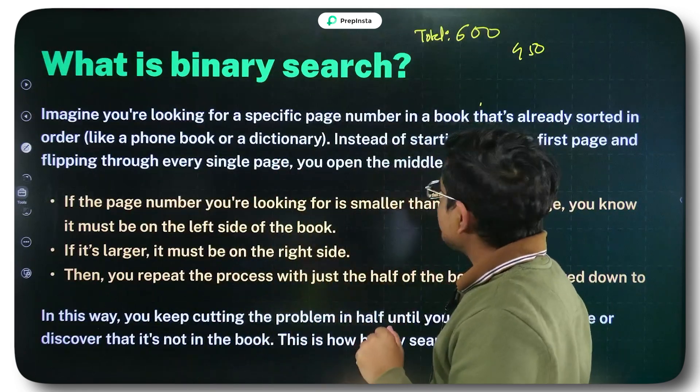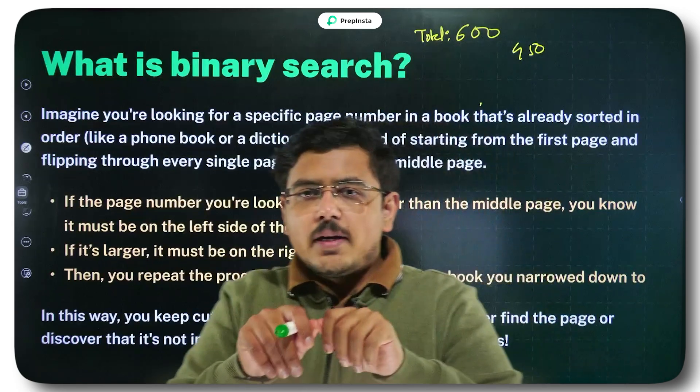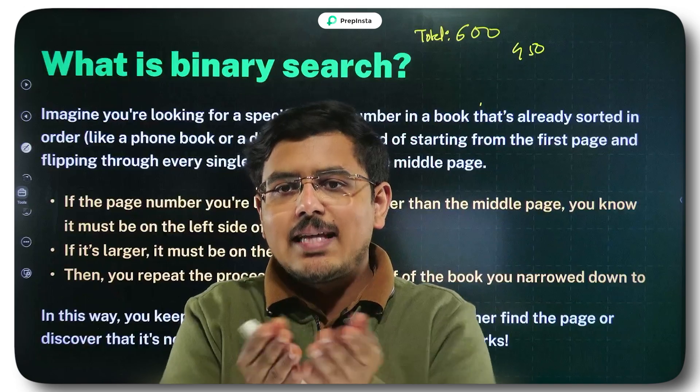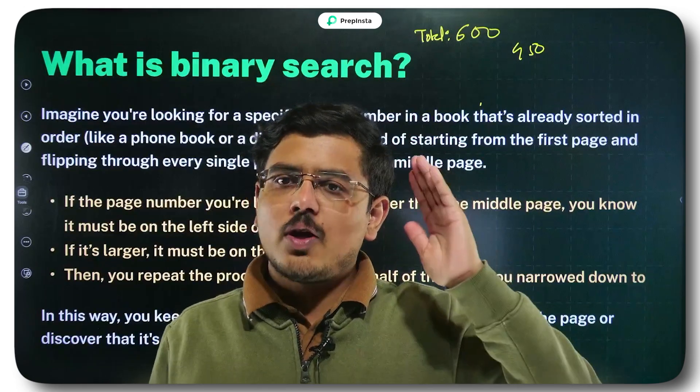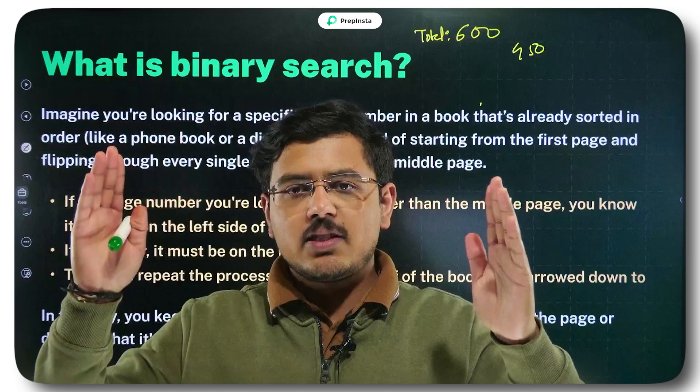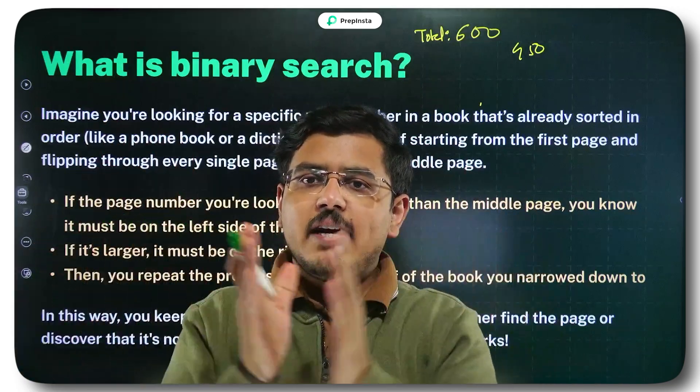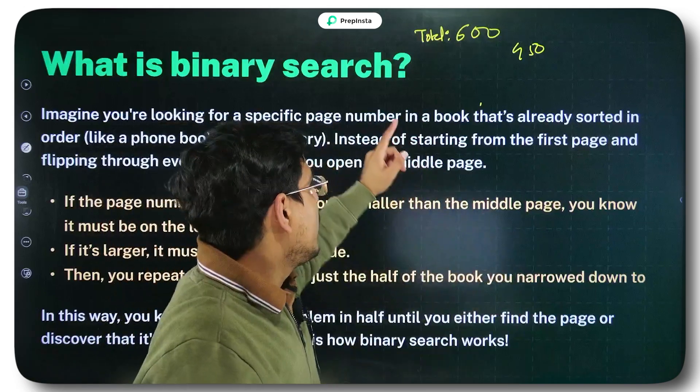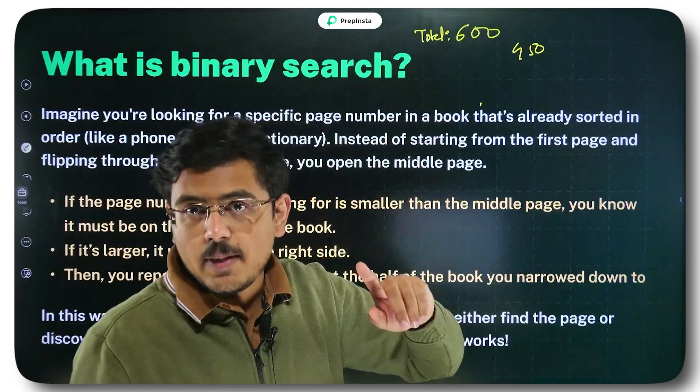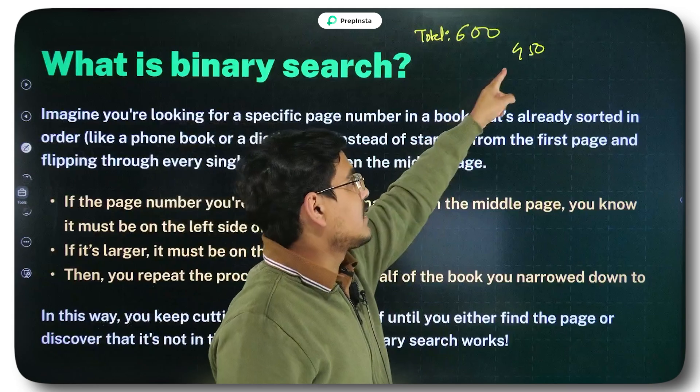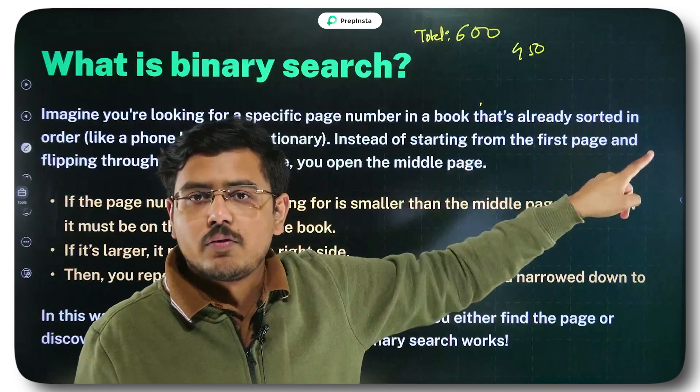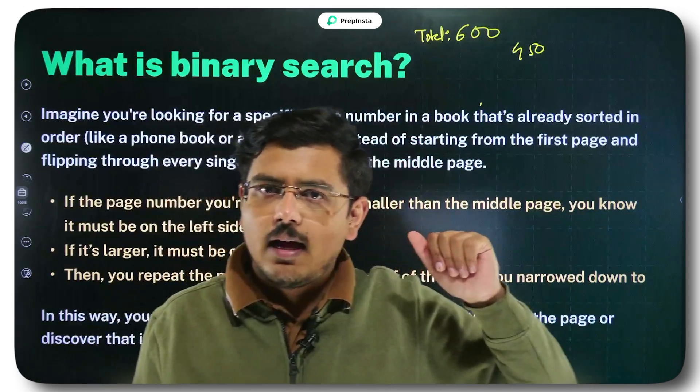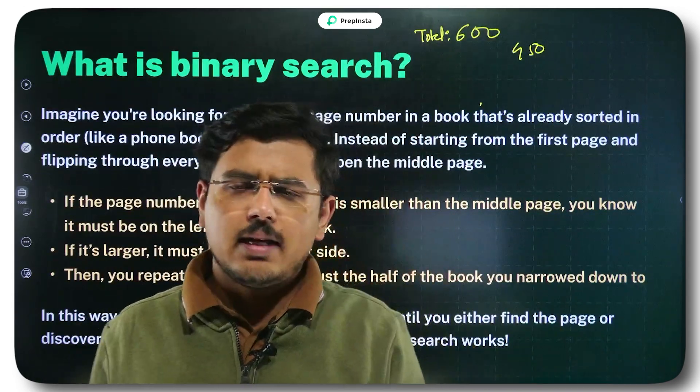So what we do is we split the book, basically not tear the book, what you do is you open the book from the exact middle, you fix your left extreme to the first page, you fix your right extreme to the last page, you try finding out the middle of the book, you open it and then you check whether the number that comes out on the middle page that you just opened is lesser than 450 or is it greater than 450. Say that you opened 320, that was a middle page, say that just for a while, assume it.